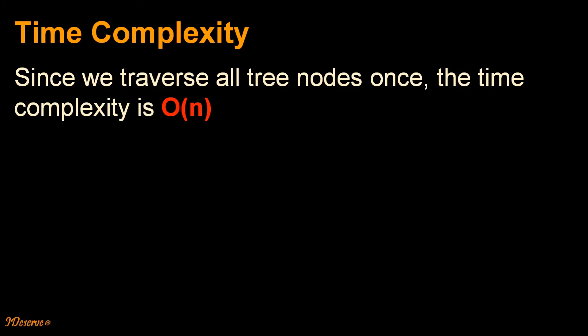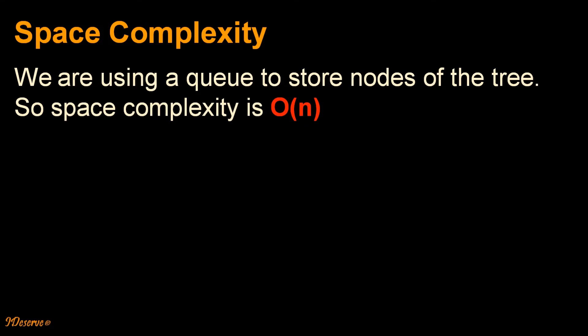The time complexity of the algorithm is order of n because we traverse all tree nodes once. The space complexity is order of n since we are using a queue to store nodes of the tree.